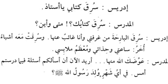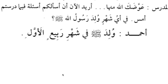Fi ayy shahrin wulida rasulullahi sallallahu alayhi wasallam? In which month was the Messenger of Allah born? Fi harfi jarr, ayy is ism, shahrin is mudaf ilayhi majrur. Wulida - fu'ila passive; naib fail is rasulullahi, which is mudaf, and Allahi is mudaf ilayhi. Ahmad answers: Wulida sallallahu alayhi wasallam fi shahri Rabi' il-Awwal - he was born in the month of Rabi' al-Awwal.